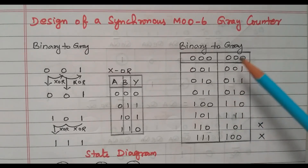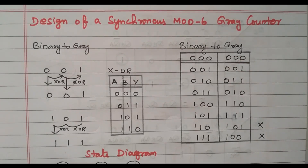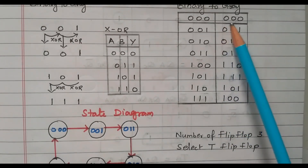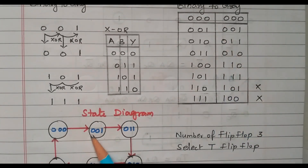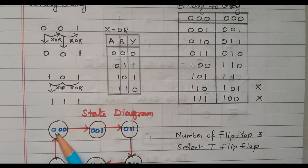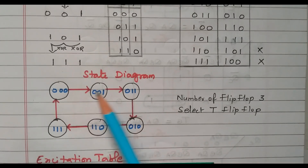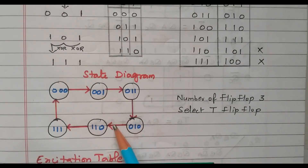Now we will see the state diagram. The states are: 000 → 001 → 011 → 010 → 110 → 111 → back to 000. The remaining two combinations are the don't care conditions. From this state diagram we can identify that three flip-flops are required.